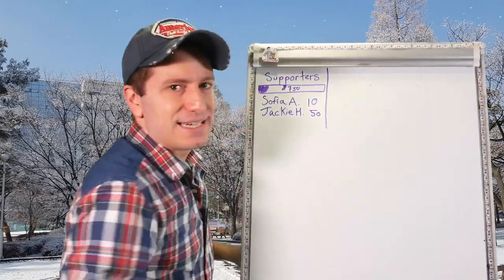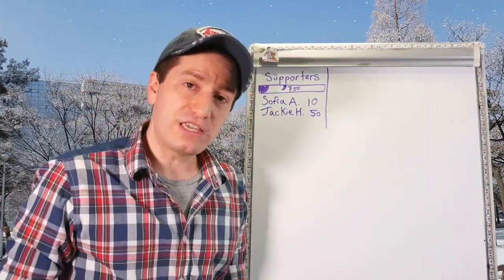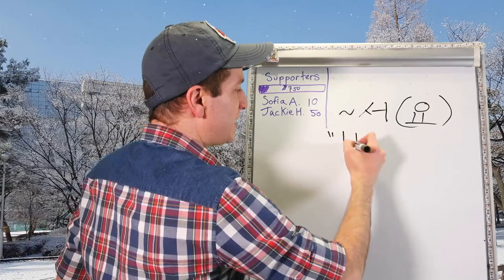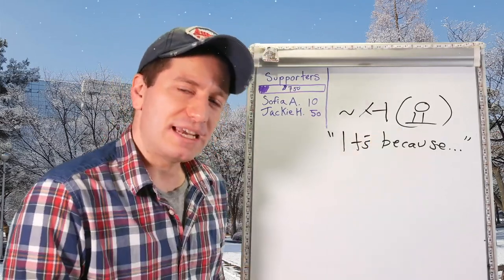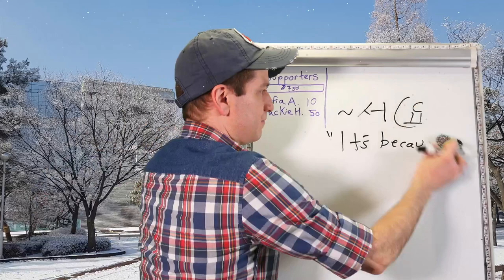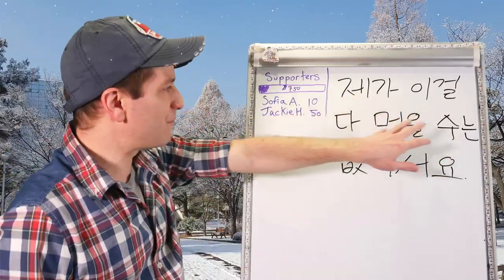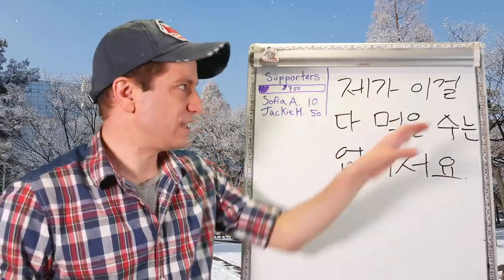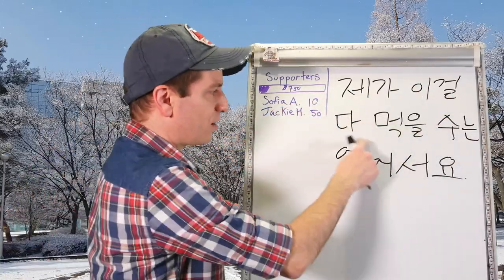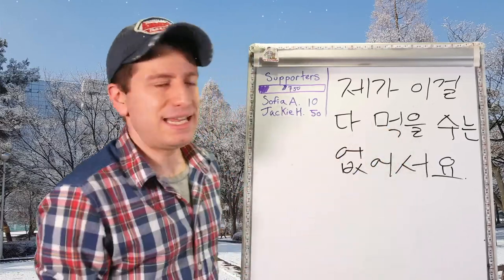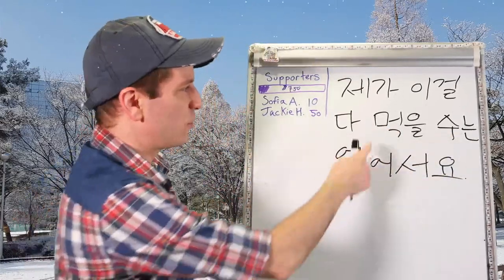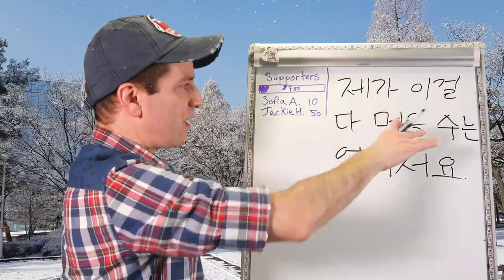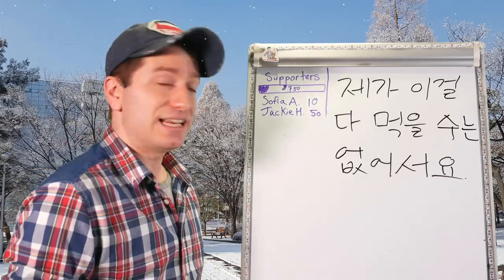Just like the 니까 ending, the 서 ending can also be used at the end of a sentence as 서 or 서요, to mean 'it's because.' This is fairly common in conversation. For example: 제가 이걸 다 먹을 수는 없어서요 — I can't eat all of this, it's because I can't eat it all.